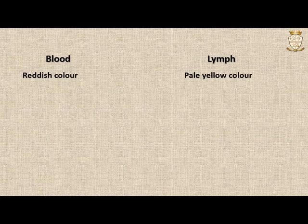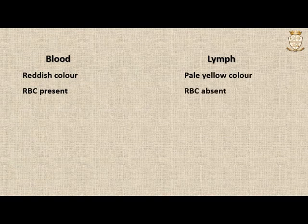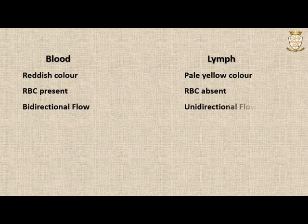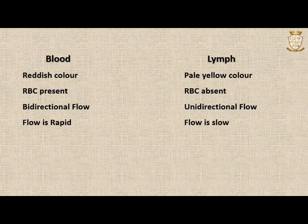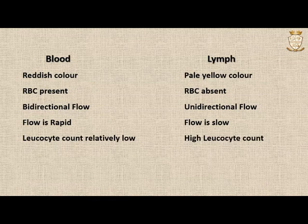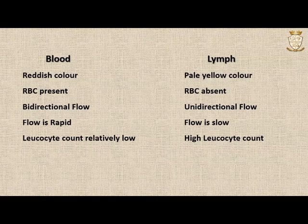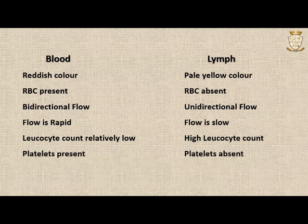Key differences between blood and lymph: blood is reddish colored while lymph is pale yellow. RBCs are present in blood but absent in lymph. The blood circulatory system has bidirectional flow while the lymphatic system has unidirectional flow. Blood flow is rapid while lymph flow is slow. Blood has relatively low leukocyte count while lymph has higher levels of leukocytes and lymphocytes. Platelets are present in blood but absent in lymph.